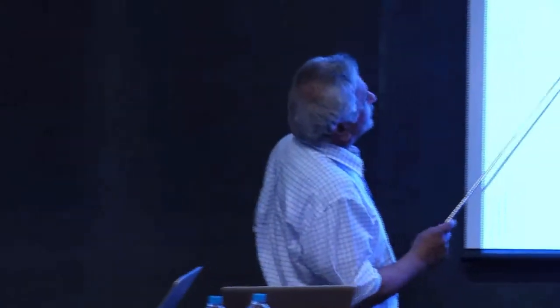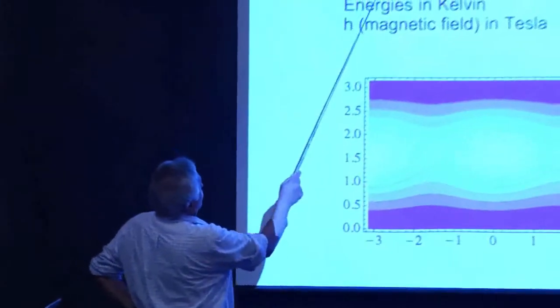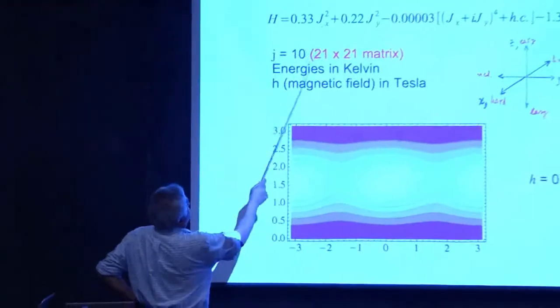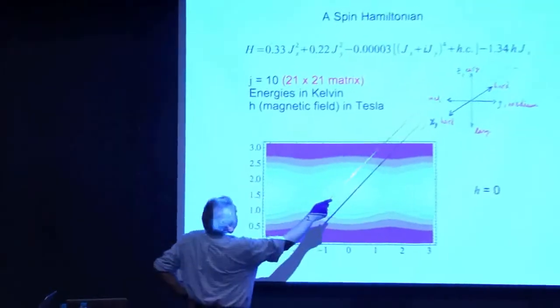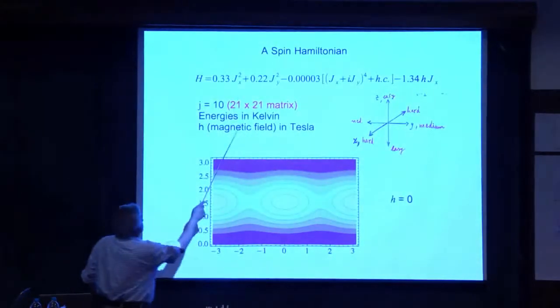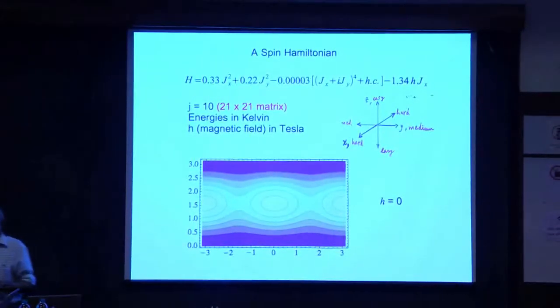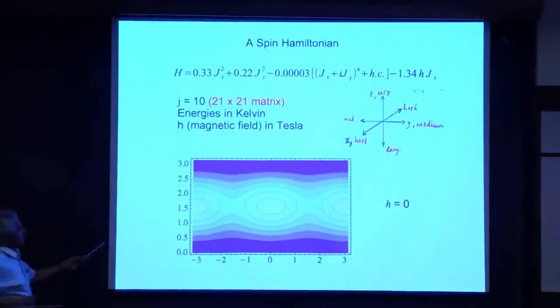The talk is going to consist of three connected stories. In the first story, I want you to look at this spin Hamiltonian. This is a Hamiltonian in terms of Jx, Jy, and Jz, which doesn't appear but is there, which are the components of the spin vector operator.